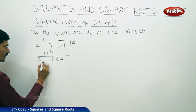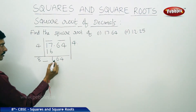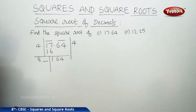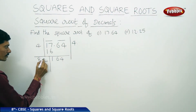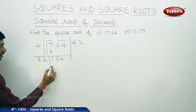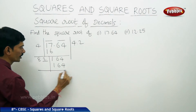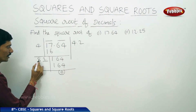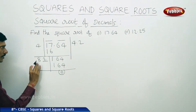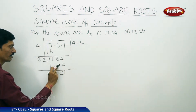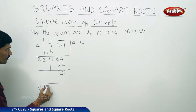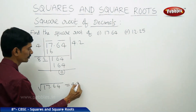Now what should be taken beside 8 to get the product 164? We can place 2 or 8 — if you take 2, then 82 twos are 164, and the remainder is 0. If you place 8, then 88 eights will become more than 164, so we can only take 2. Multiply 82 by 2: 82 twos are 164. The remainder is 0. Therefore, the square root of 17.64 equals 4.2.